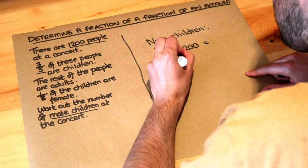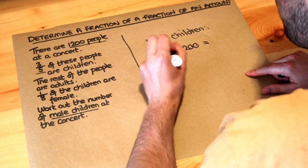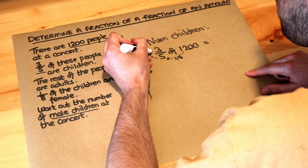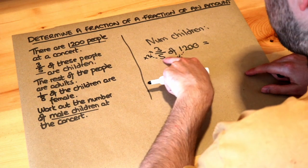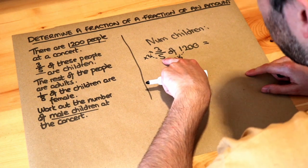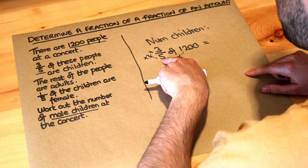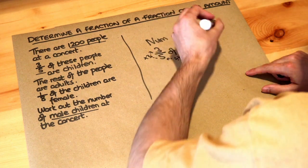You divide this number here by the denominator so you divide the 1,200 by five and then you times by the numerator so you times by the three. So 1,200 divided by five which you can do in a calculator if you want but it's 240 and then 240 times three is 720.